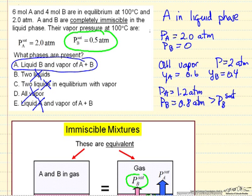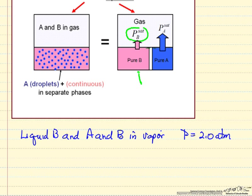We're left with this possibility. Let's see if this is a reasonable solution. So if we have liquid B present, A and B in the vapor, then the pressure of B would be at saturation pressure because of liquid present. So that's 0.5 atmospheres. And since the total pressure is the pressure of A plus the pressure of B, and it's equal to 2 atmospheres, that means the pressure of A must be 1.5 atmospheres.